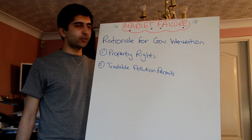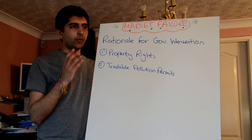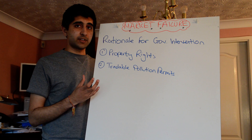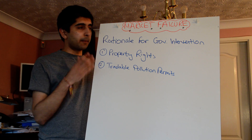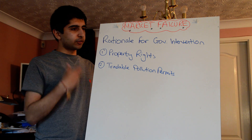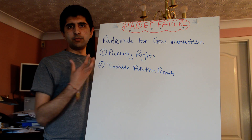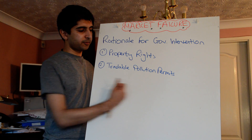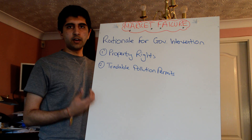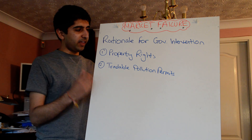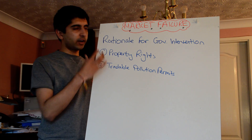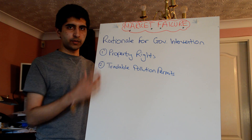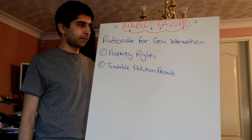In the previous video we talked about why in environmental circumstances a market might fail. We looked at resource depreciation and resource degradation and the fact that some aspects of the environment are considered to be public goods. Therefore, there's a rationale for government intervention to solve such failures in the markets.